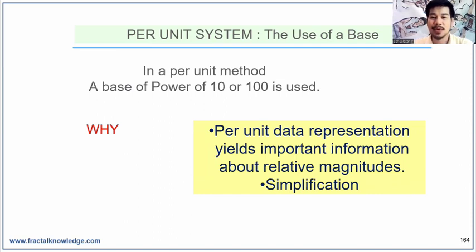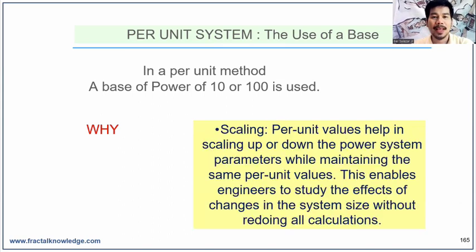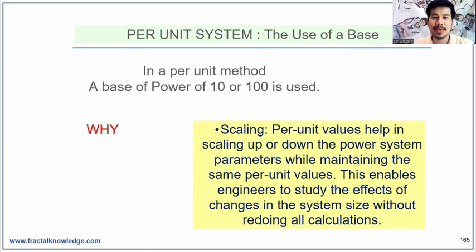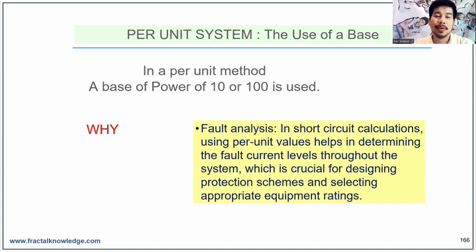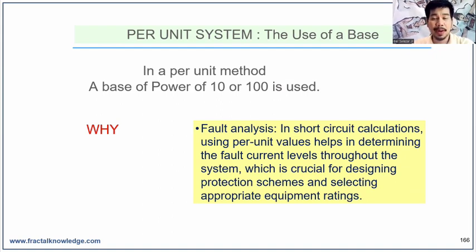Per unit values help simplify complex calculations by eliminating the need to repeatedly convert between different units and voltage levels. By representing all values in a standardized form, calculations become more straightforward. Per unit values also help us scale up or down the power system parameters while maintaining the same per unit values, enabling engineers to study the effect of changes in the system's size without redoing all calculations. In short circuit calculation, using per unit values helps determine current levels throughout the entire system, which is crucial for designing protection schemes and selecting appropriate equipment ratings.